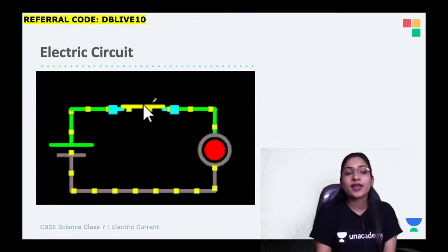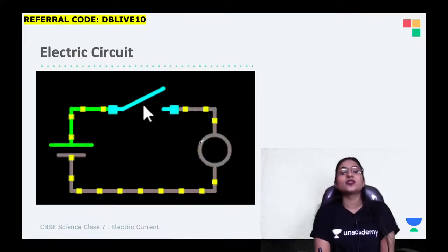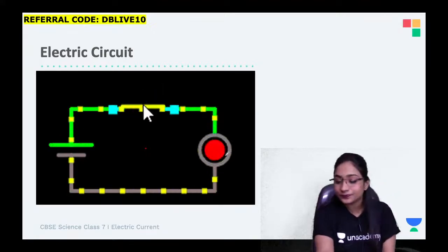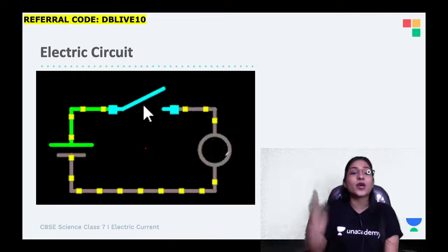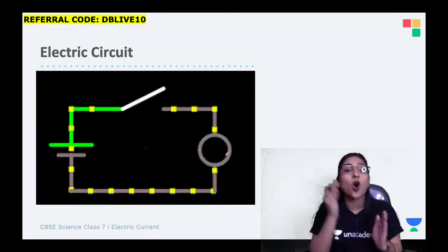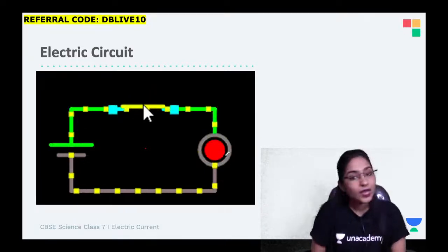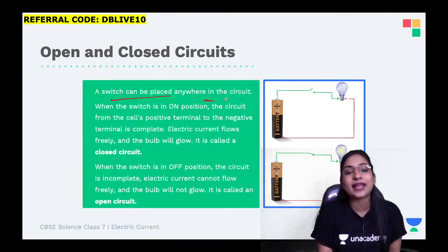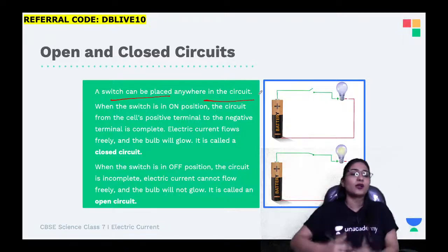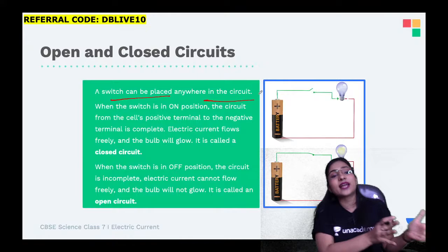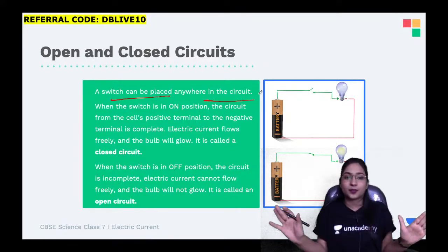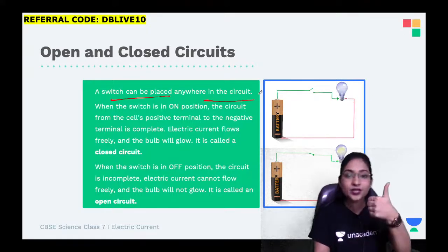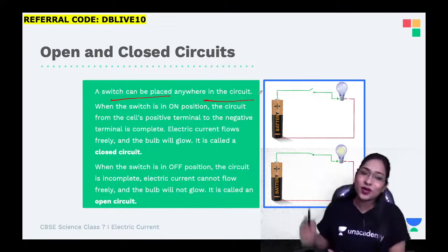Then we have an open circuit. When the circuit is open, the bulb is not glowing. When the circuit is closed, the bulb is glowing. Remember: circuit closed means switch on means bulb glows. Circuit open means switch is off and the circuit is incomplete. Switch can be placed anywhere in the circuit - it doesn't matter. The only thing is, if you want the bulb to glow, the switch should be on and the circuit should be complete with no gap.